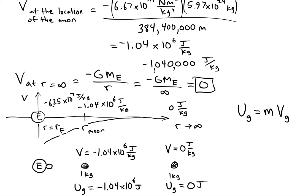On Earth's surface, the 1 kg object would have negative 6.25×10⁷ joules of gravitational potential energy. You can see the pattern: energy becomes more negative closer to Earth. Now let's apply this same idea to the 23,300 kg spaceship.